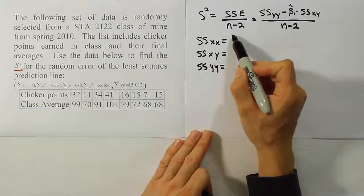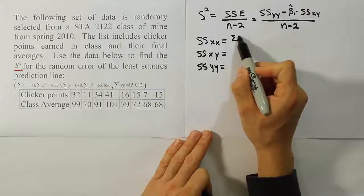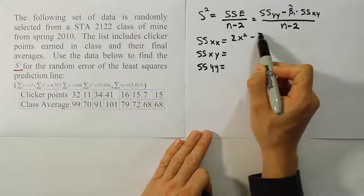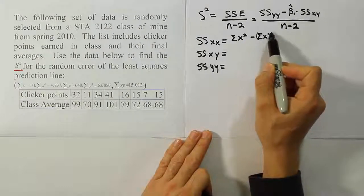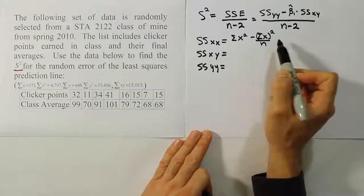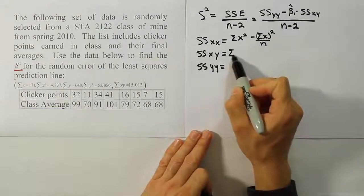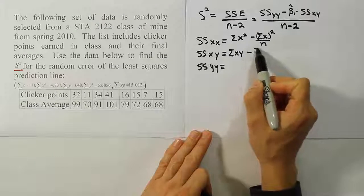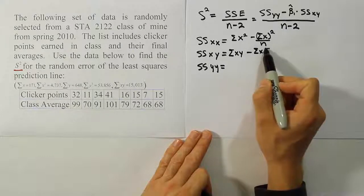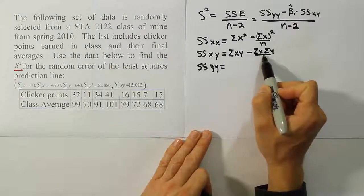So the formulas for these are as follows: sum of X squared minus the sum of X quantity squared divided by N. This one will be the sum of the XY term minus the sum of X times the sum of Y divided by N.